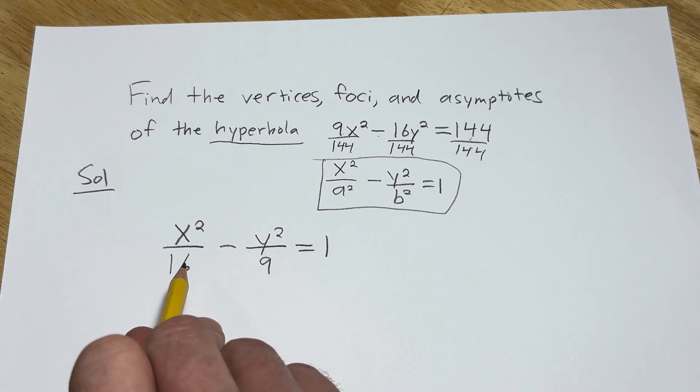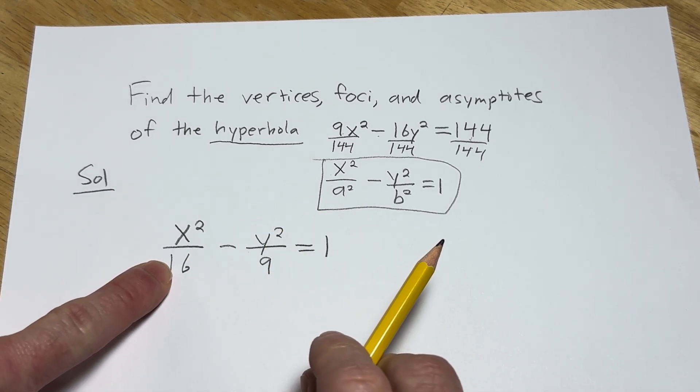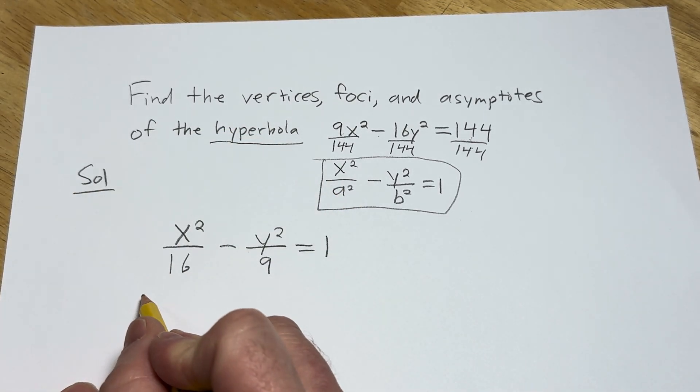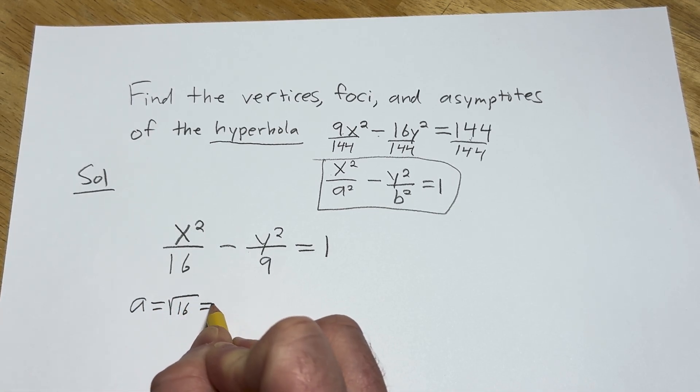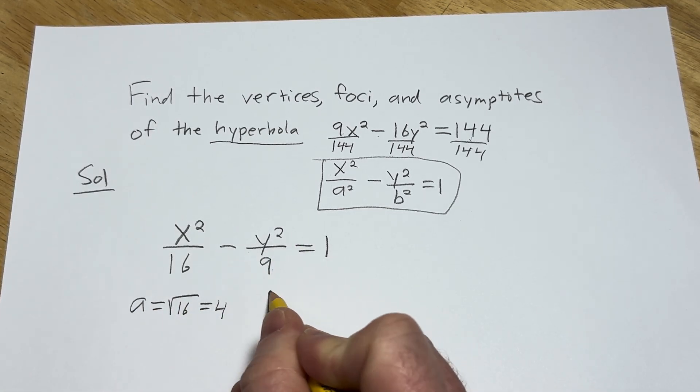A is always the square root of whatever number is here, in a hyperbola. So A, and that's, again, something you should know. Very helpful. So A is 4, and B is the square root of this number, which is 3.